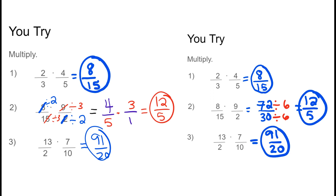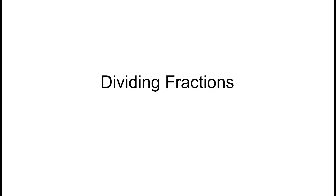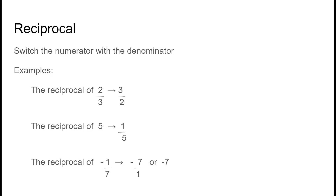The last thing we're going to do is divide fractions. When we're dividing fractions, we need to talk about reciprocals. A reciprocal is when we switch the numerator with the denominator. The reciprocal of two-thirds is three over two. For the reciprocal of 5, remember that 5 secretly has a 1 on the bottom, so the reciprocal is one over five. The reciprocal of negative one over seven is negative seven over one, or negative seven — the negative has no effect on the reciprocal.